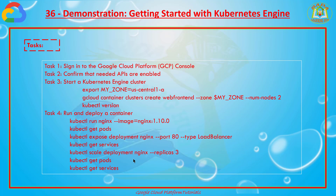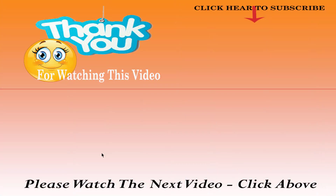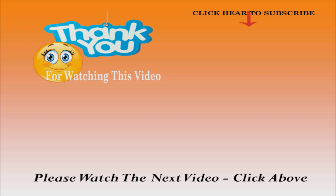That is about Kubernetes Engine — how to create it. First we confirm that the APIs are enabled, then start the Kubernetes Engine using the gcloud shell to create the cluster. After that, run and deploy an application: create the container, deploy nginx into it, and run it in the Kubernetes Engine. The application is running successfully from the external IP address. Thank you for watching — please like, subscribe to Sada Learning Hub, and keep watching our lessons.